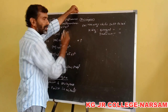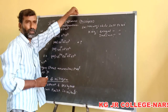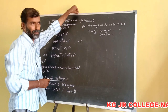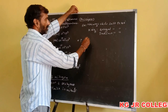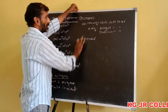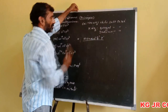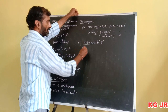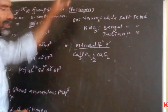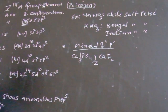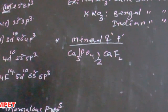Phosphorus is the eleventh most abundant element in the earth's crust. Minerals of phosphorus include: fluorapatite — Ca3(PO4)2·CaF2, and chlorapatite — Ca3(PO4)2·CaCl2.